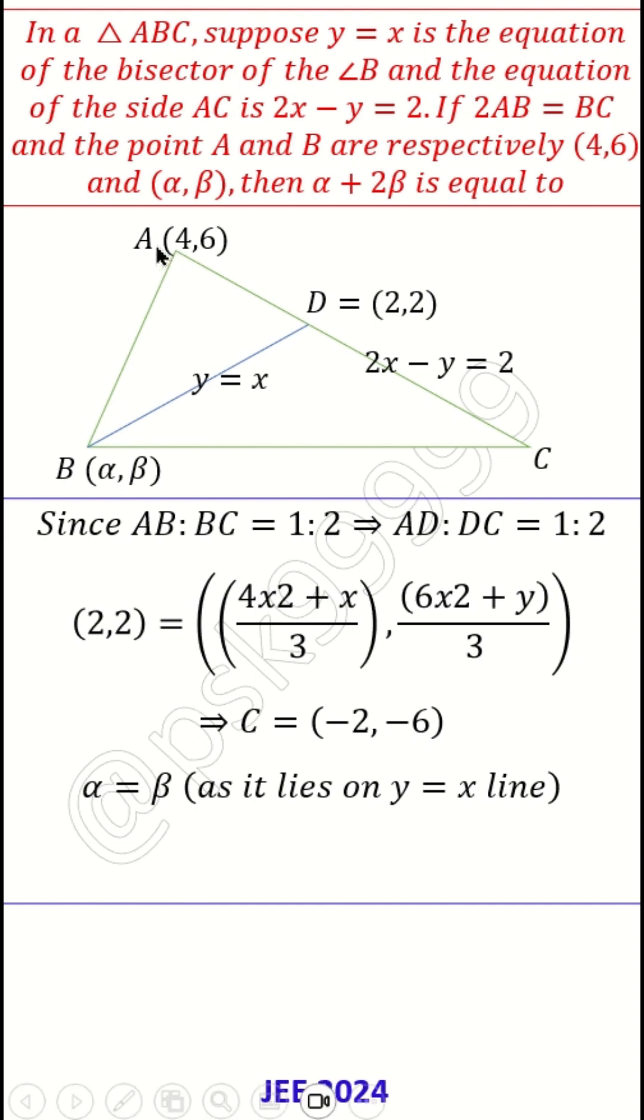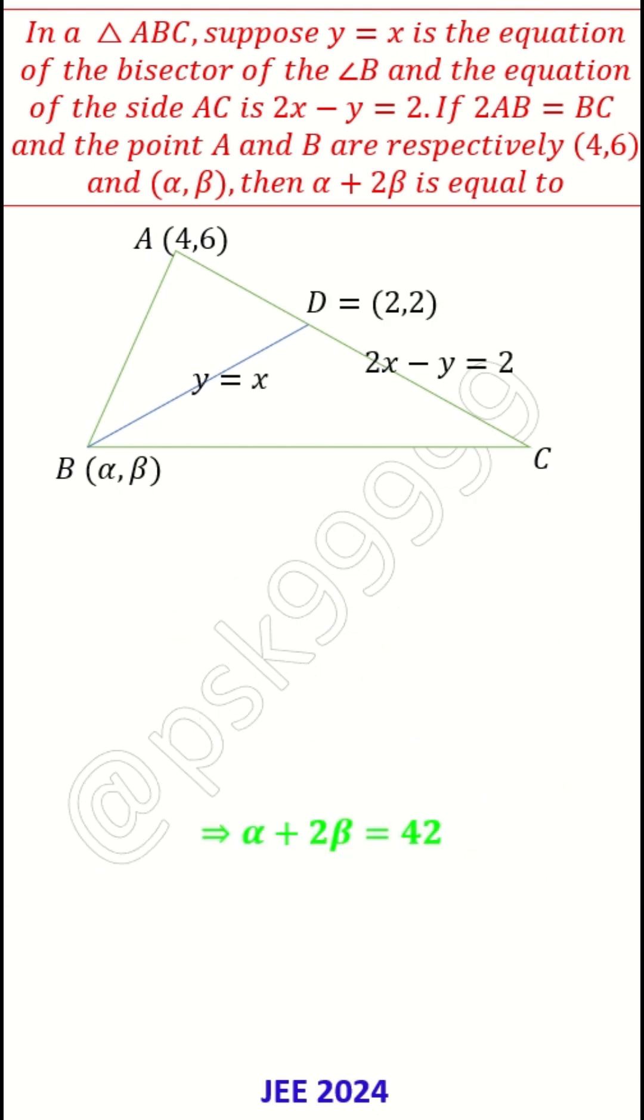Once we know this, we have the given information AB = 2BC. We have these two points, so just apply the distance formula. Taking the square: 4AB² = BC².